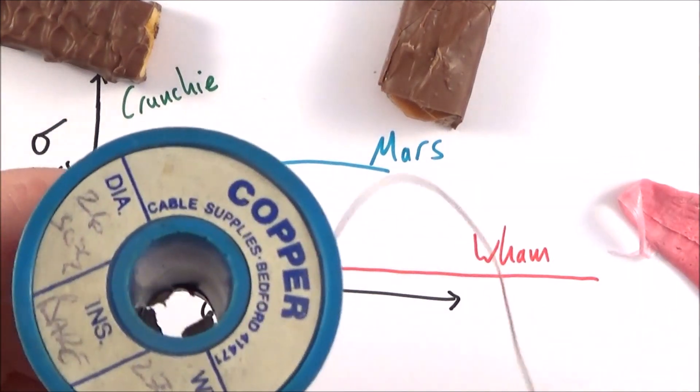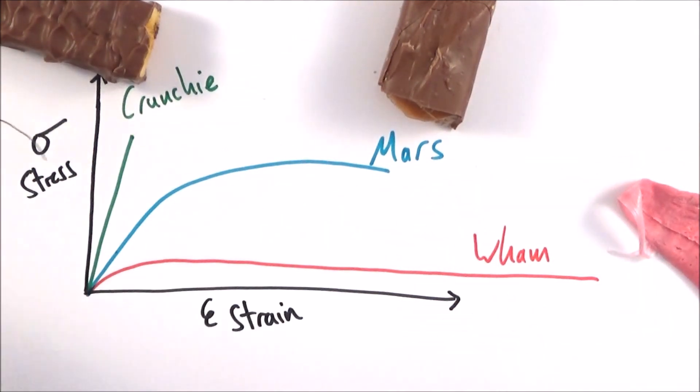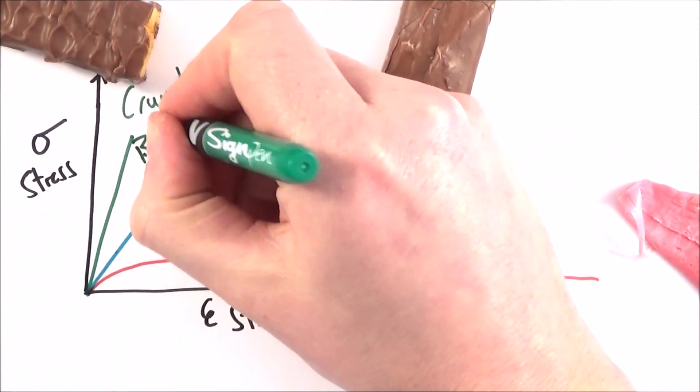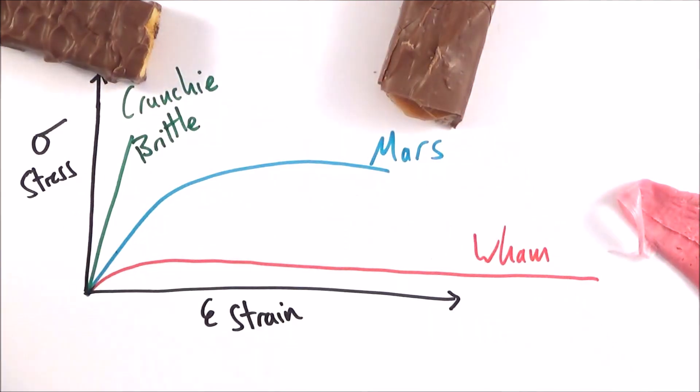But what's this got to do with the behavior of real things like metal? Well, if we look at some materials, we find that they are brittle. So that's what we can maybe think of as our Crunchy. It doesn't just bend, it kind of snaps.